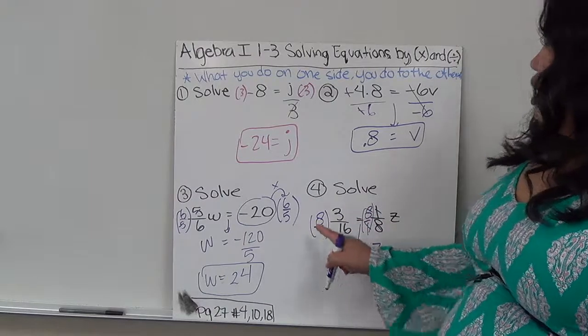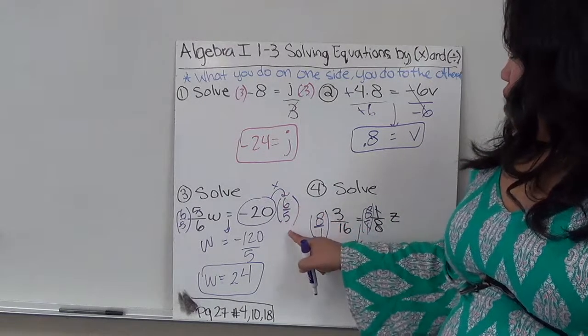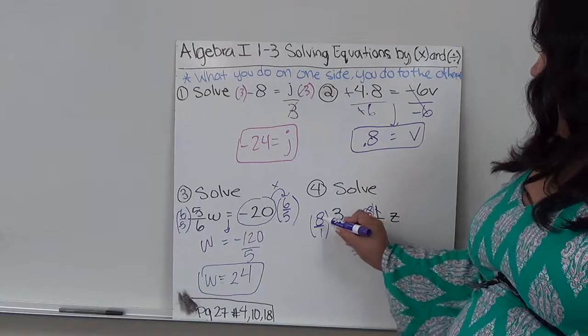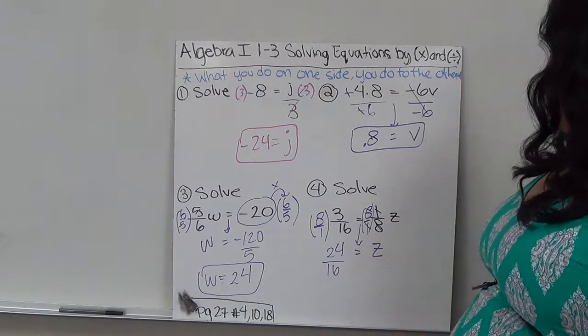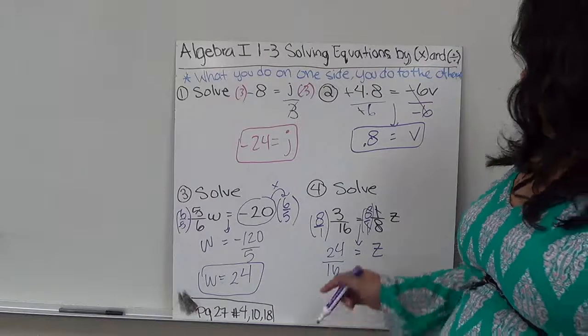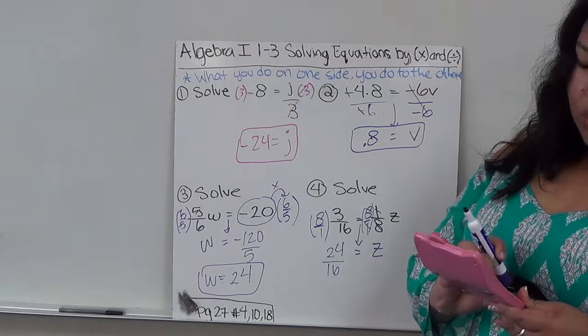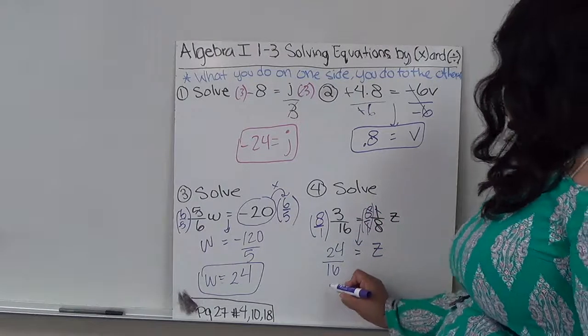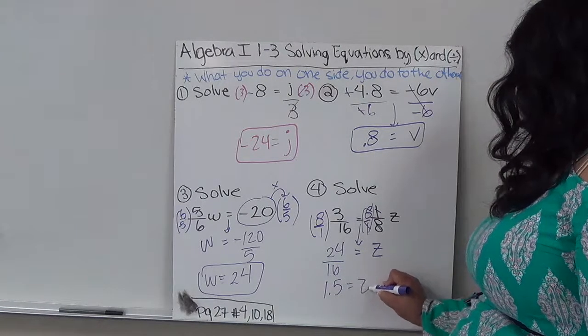Now, in this case, I multiplied by a whole number, so I have to multiply the top and then divide by the bottom. But because I'm multiplying a fraction, I'm just going to multiply it across. 8 times 3, which is 24, and then 16. Now, this will give me a decimal, or I can reduce it. Either answer I will accept, so 24 divided by 16 gives me 1.5 equals z.